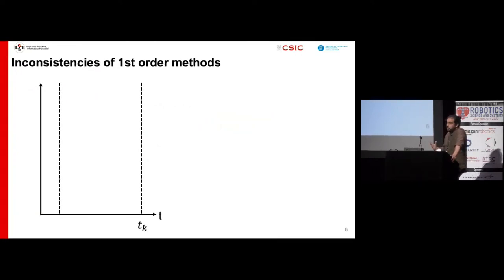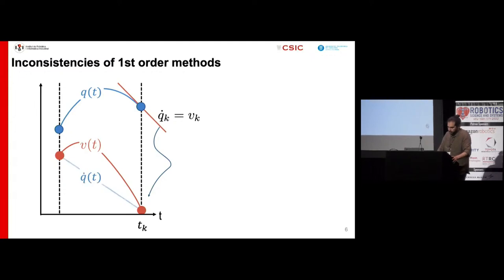In usual collocation, configuration and velocity trajectories are approximated using polynomials of the same degree. Collocation equations force the slope q dot k to match the v k value at the collocation points. However, q dot of t will be a polynomial of a lower degree than v of t, so the two polynomials will not coincide. This yields an inconsistency between the q and v trajectories.